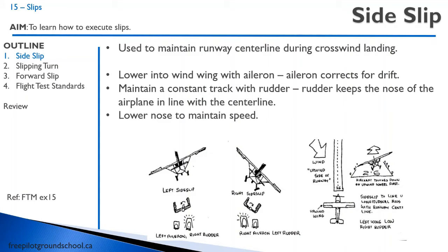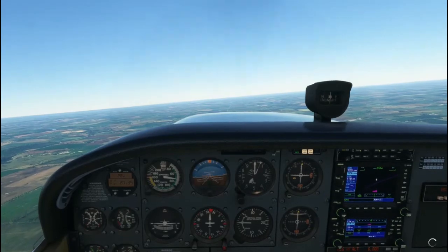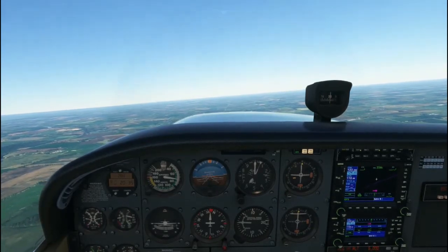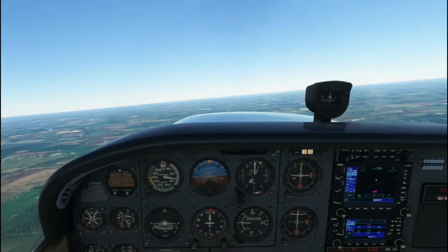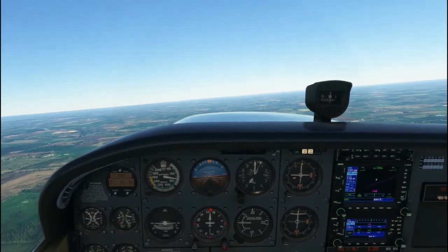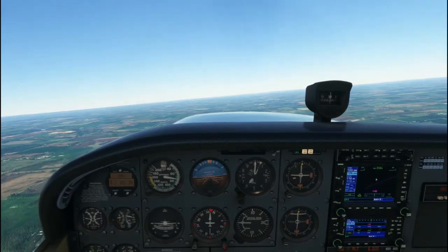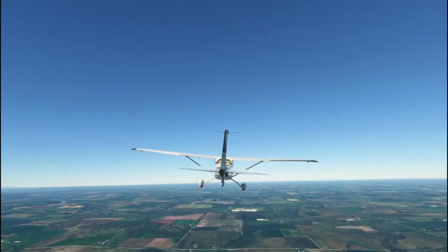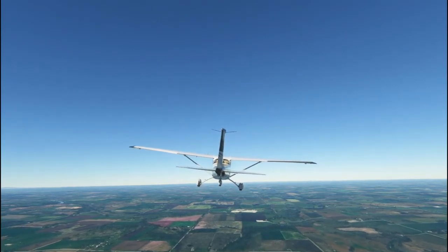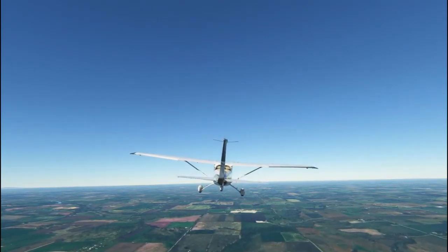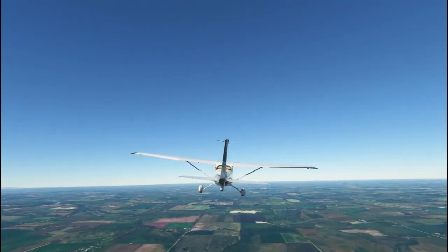We line up with the runway and don't want to get blown off course, so we put the ailerons into the wind but need to stay straight, so we apply opposite rudder. To do a side slip, roll the aircraft to a gentle banked attitude into the wind. Keep the longitudinal axis of the aircraft straight using your rudder. Notice the aircraft is banked into the wind but the rudder is deflected in the opposite direction.